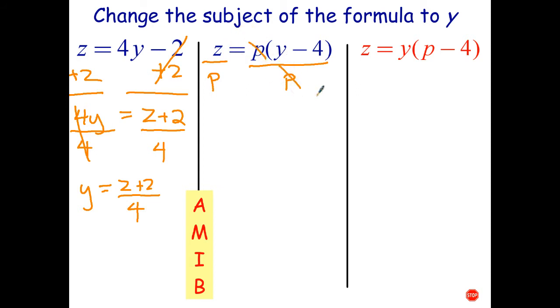The p's cross out. That leaves me with just y minus 4, which I'm going to write on the left, equals z over p.